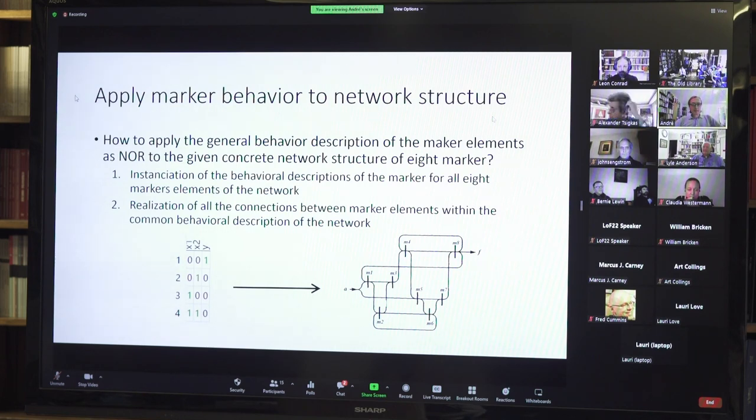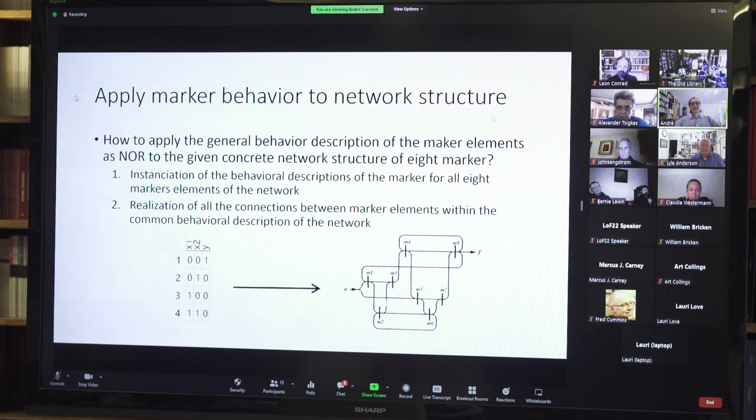How do we apply this marker element behavior to the network structure? The method of analyzing it consists of two main steps. The first step would be the instantiation of the behavioral description of the eight marker elements for all eight markers of the network. We have to separate the generic description x1, x2, and y to the eight different elements. The second step is to realize all the connections between the marker elements within this common behavioral description of the network.